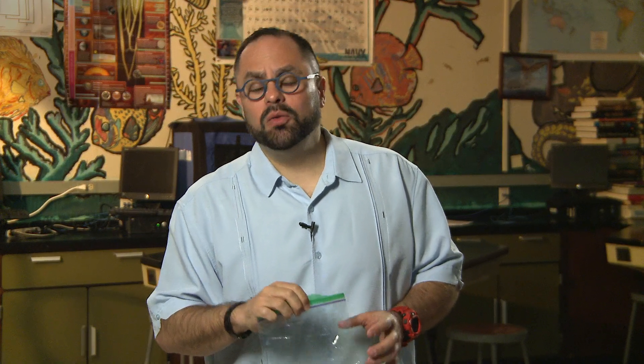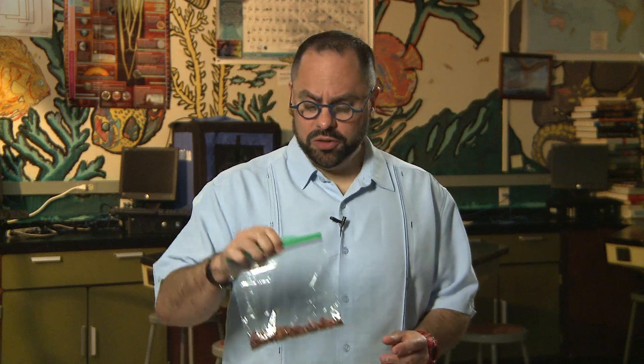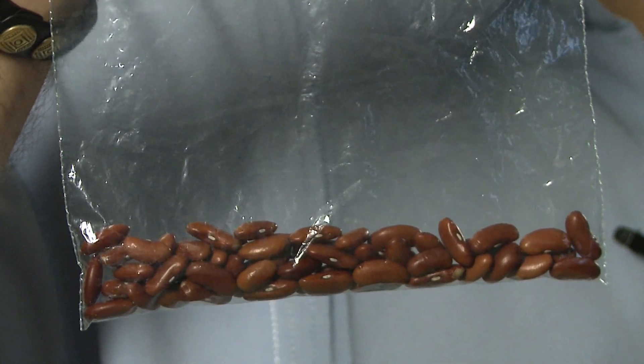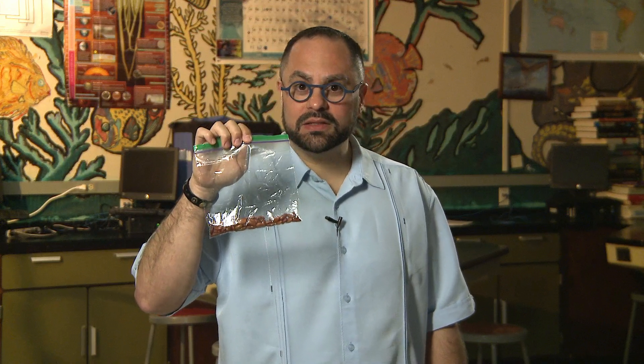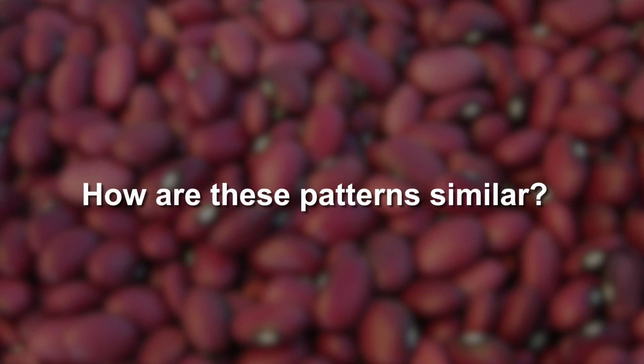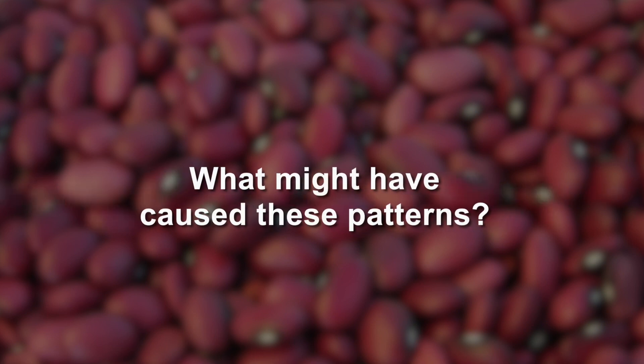During this part of the lesson, you'll be working in small groups using a bag of beans that your teacher has prepared for you to explore variations within a population. Once you receive your bag of beans, consider the following questions: What patterns do you notice when observing the beans? How are these patterns different? How are these patterns similar? And what might have caused these patterns? Patterns are found in nature and in the design world, and by carefully observing those patterns, we may be able to find their causes.